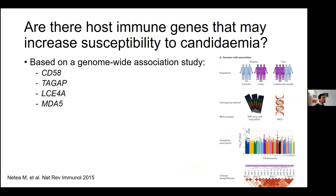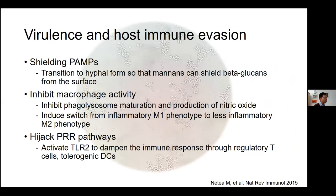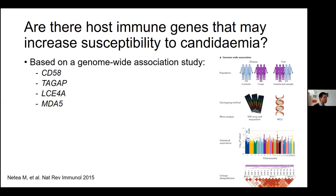There are some potential host immune genes that may actually increase susceptibility to candidemia. Based on a genome-wide association study, several genes have been associated with increased susceptibility to candidemia. Most of these genes encode for various pathways along the immune pathways outlined.